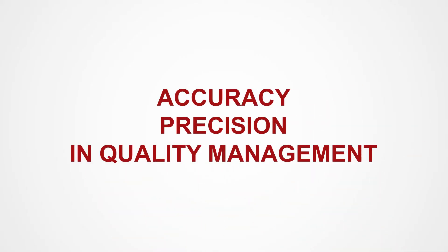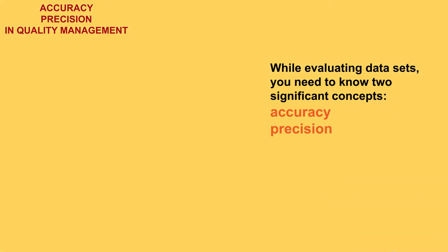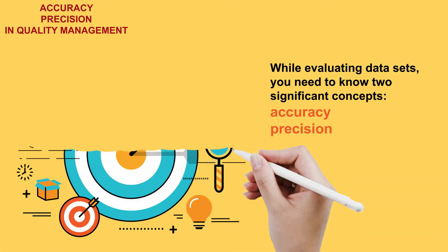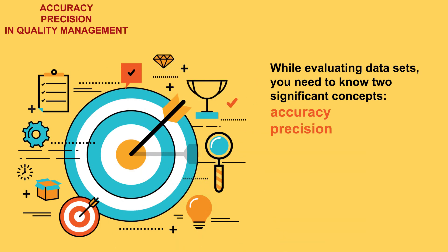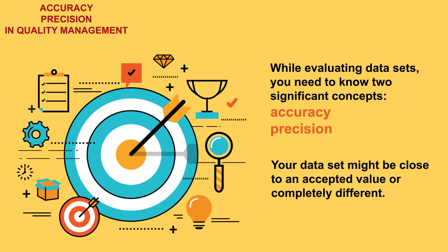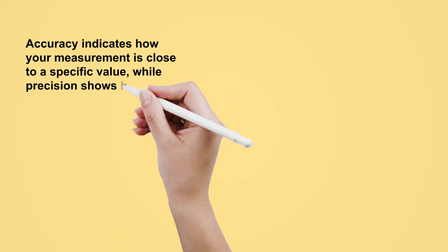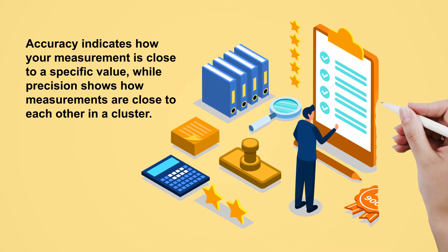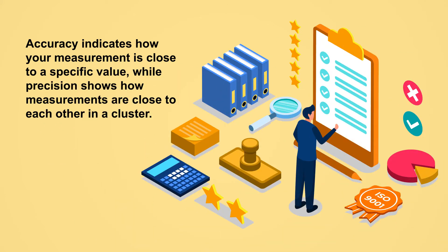In quality management, while evaluating data sets, you need to know two significant concepts: accuracy and precision. Your data set might be close to an accepted value or completely different. The main difference between accuracy and precision is that accuracy indicates how close your measurement is to a specific value, while precision shows how close measurements are to each other in a cluster.